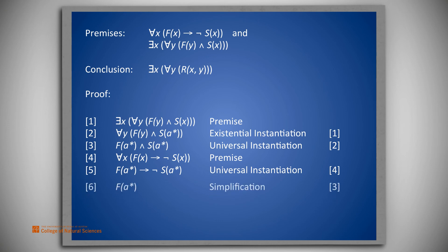On line 6, we simplify line 3 to f of a star, then use modus ponens in line 7 to get not s of a star. That used lines 5 and 6. Another simplification from line 3 results in s of a star. This is placed on line 8.